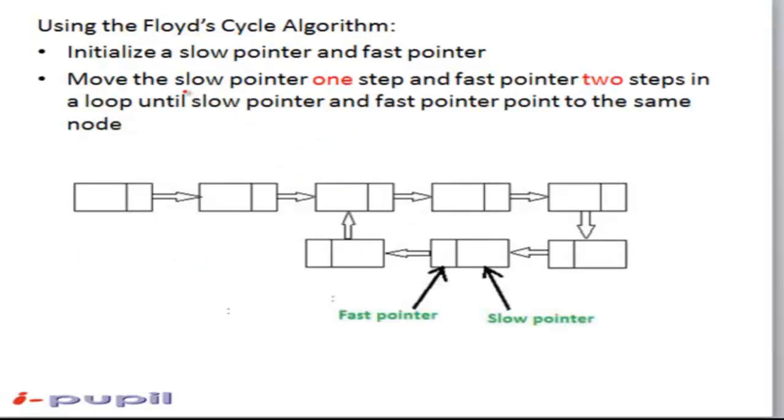We move the slow pointer one step and the fast pointer two steps in a loop until slow pointer and fast pointer point to the same node.